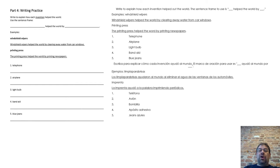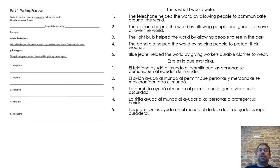The rest of the words to use are: one, telephone; two, airplane; three, light bulb; four, band-aid; five, blue jeans. This is what I would write. One, the telephone helped the world by allowing people to communicate around the world. Two, the airplane helped the world by allowing people and goods to move all over the world. Three, the light bulb helped the world by allowing people to see in the dark. Four, the band-aid helped the world by helping people to protect their wounds. Five, blue jeans helped the world by giving workers durable clothes to wear.